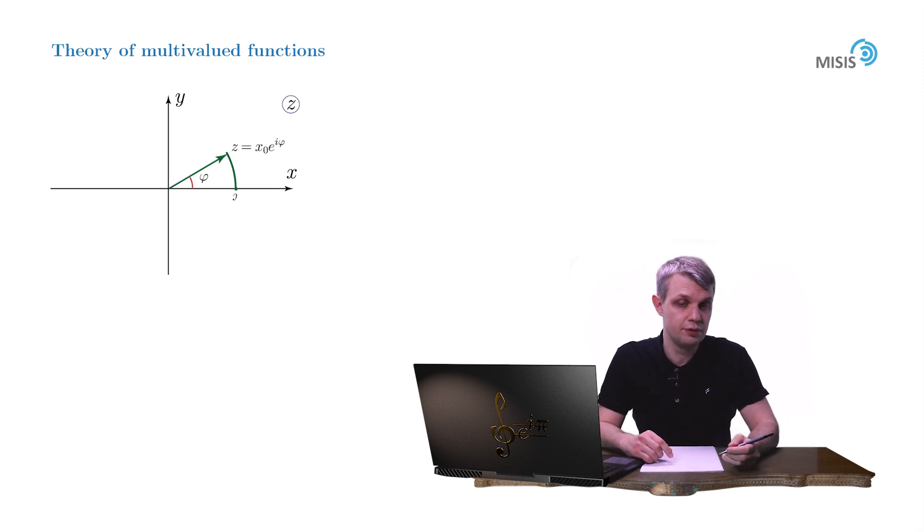So we have for our complex number z equals x₀ times e^(iφ). So how would you define the square root of this number? Well, the most natural way would be to define the square root of z as the square root of x₀ times e^(iφ/2).